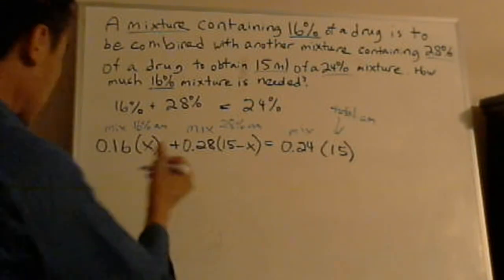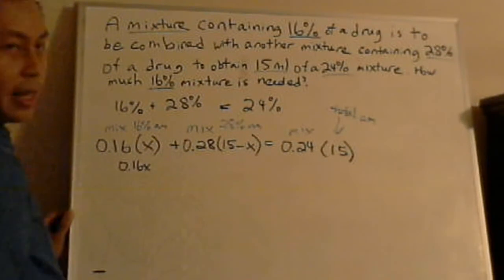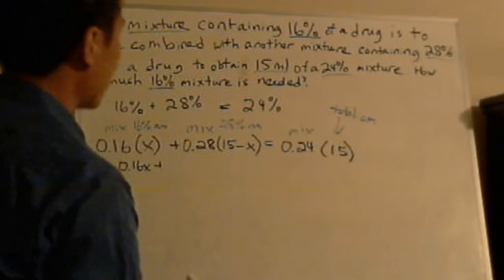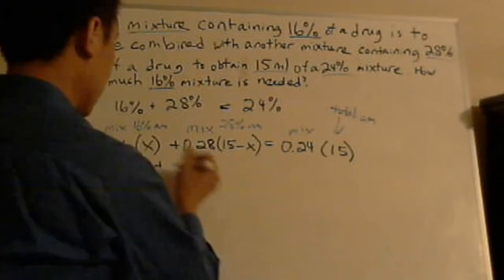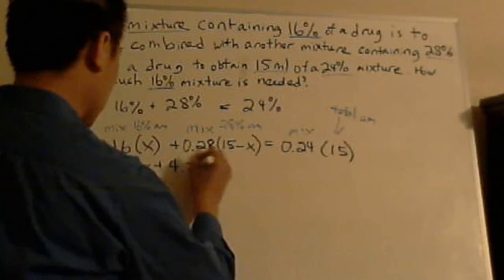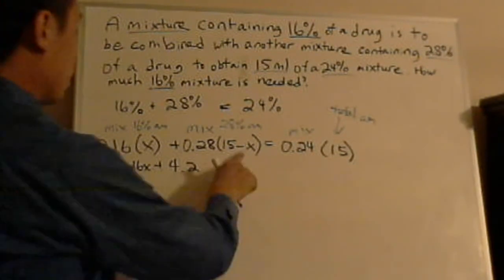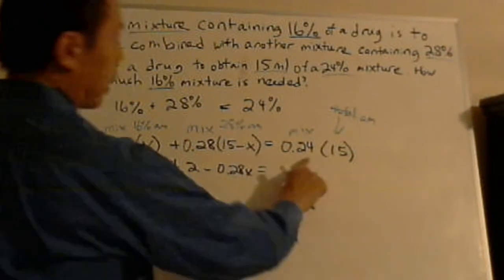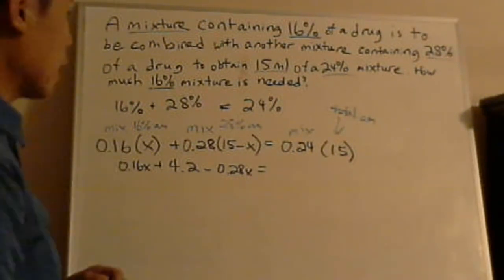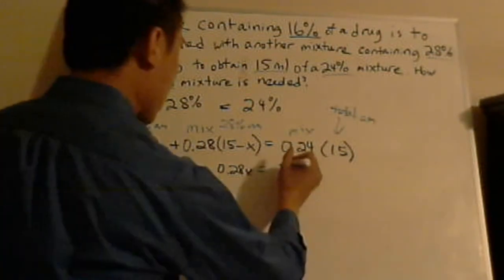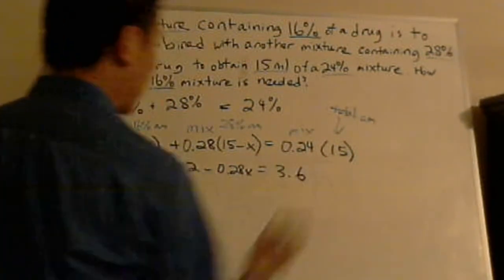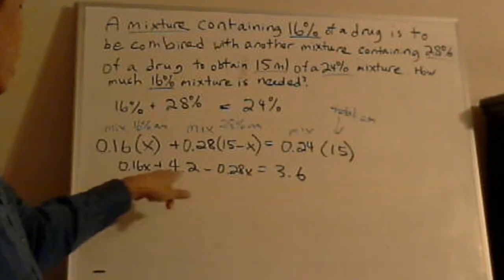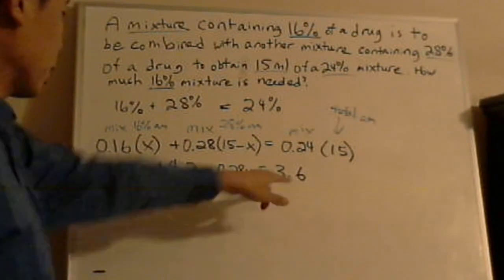So let's do 0.16x. And let's distribute this. 0.28 times 15, that is, if I do it correctly in my head, is 4.2. Minus 0.28x. And then 0.24 times 15, that is, it should be 3.6 if I'm not mistaken.